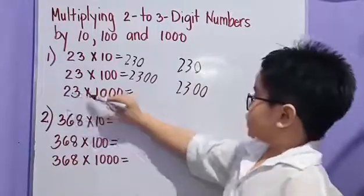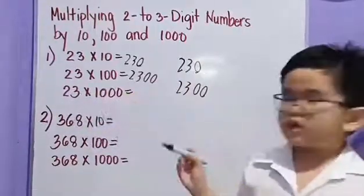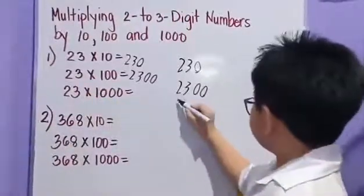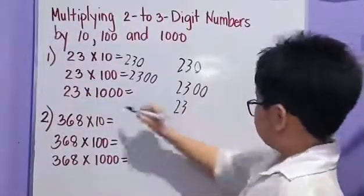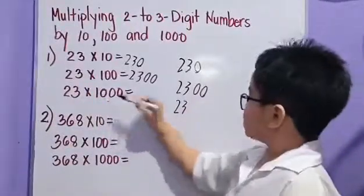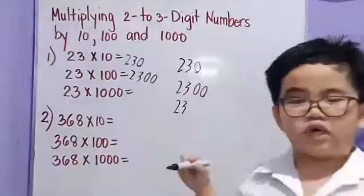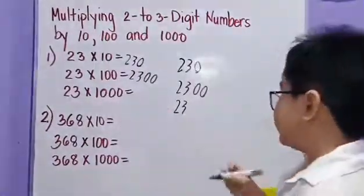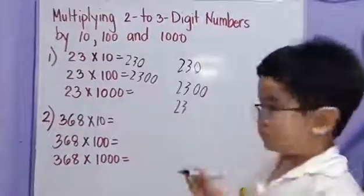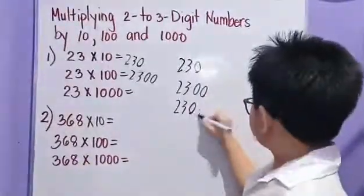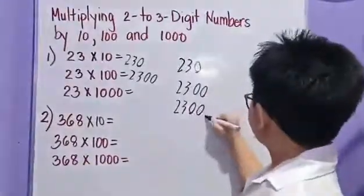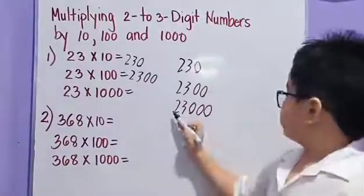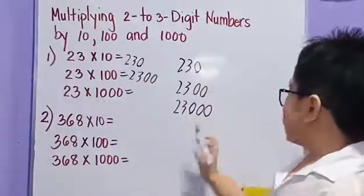Twenty-three times one thousand: we have twenty-three times one is twenty-three. Let's count how many zeros we have — one, two, three. Let's add three zeros: one, two, three. Then we have twenty-three thousand.